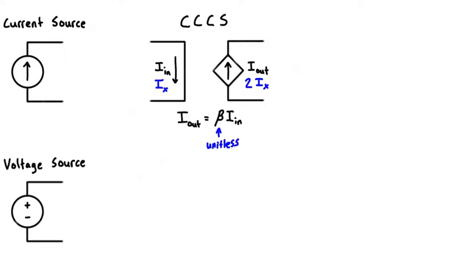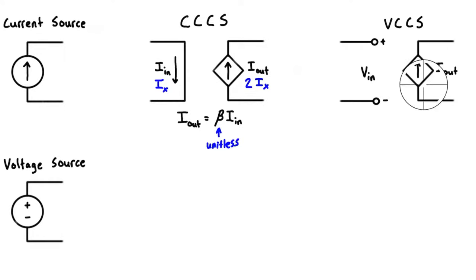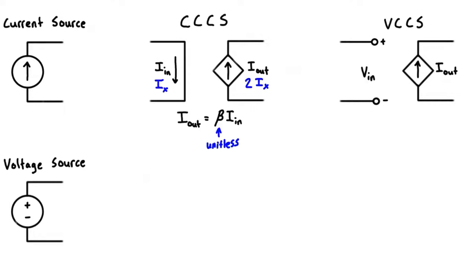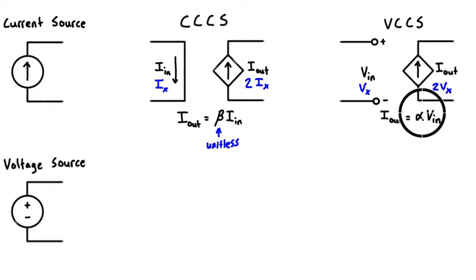There's another type of dependent current source called the voltage controlled current source (VCCS), and again we use the diamond shape. This current source puts out a certain amount of current, but it's based on another voltage somewhere else in the circuit — the controlling voltage — and the current it puts out is the dependent current. The dependent current equals a multiplying factor (often given the letter alpha) times the controlling voltage. You might see it written as vx for the controlling voltage, and the dependent current labeled as something like 2vx or 0.5vx. Alpha has units of Siemens — which is the same as one over ohms — because it equals current divided by voltage.